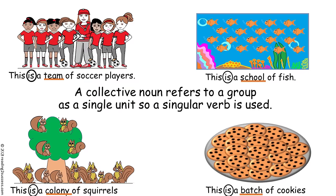A collective noun refers to a group as a single unit, meaning one unit, so a singular verb is used. As in our examples, the singular verb 'is' is used instead of 'are': This is a team of soccer players. This is a school of fish. This is a colony of squirrels. And this is a batch of cookies.